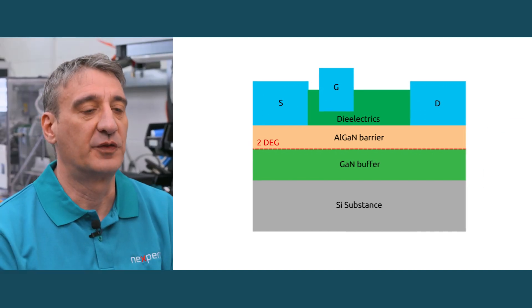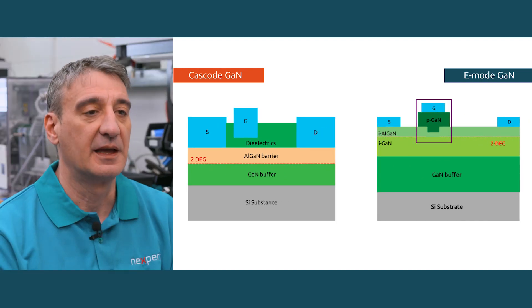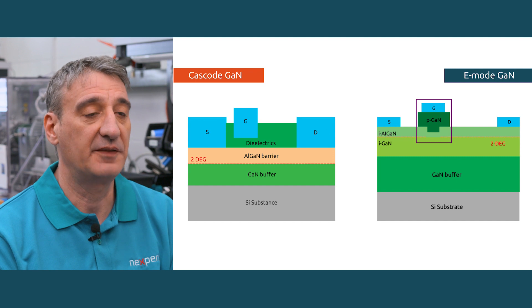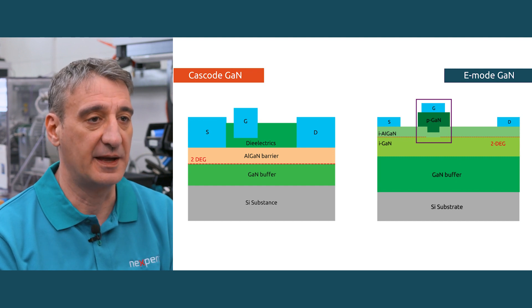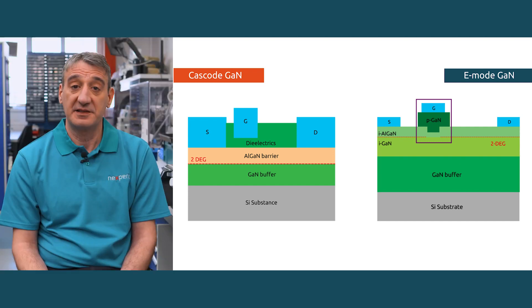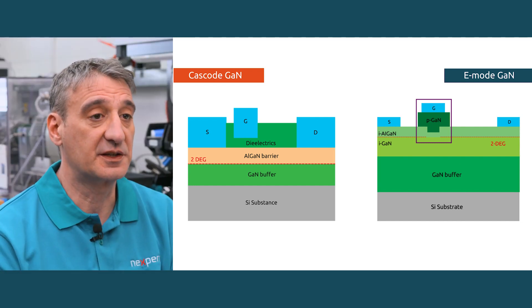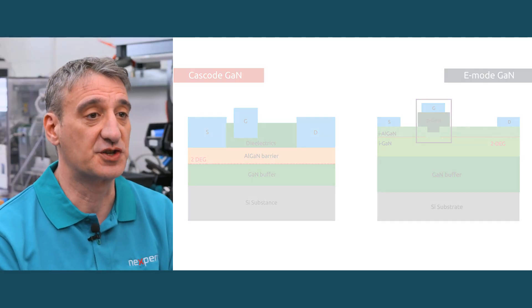In the case of E-mode, a P-layer GaN is used underneath the gate. This P-layer GaN lifts up the conduction band above the Fermi level, only below the gate. As a result, there is not a 2DEG under the gate, and hence the normally-off behavior is achieved.